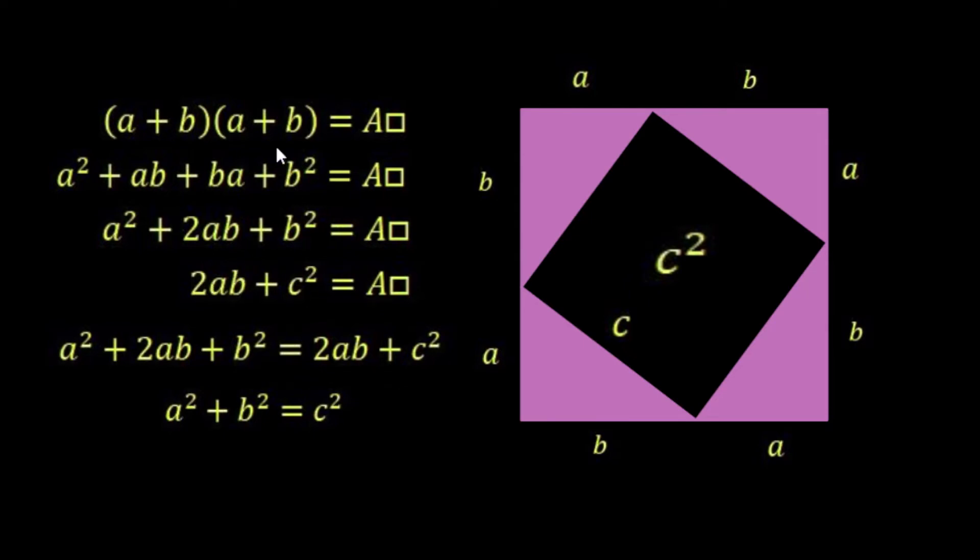Now the other bit of our algebra here tells us that it's also equal to a² + 2ab + b². Now we can get to this point here by moving the triangles within this shape, but we have to be very careful about how we move them.